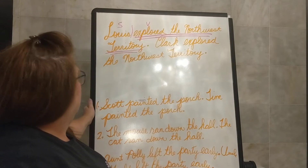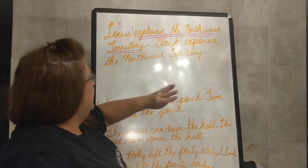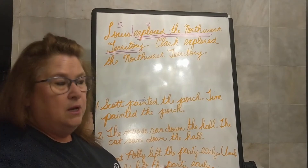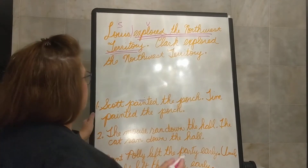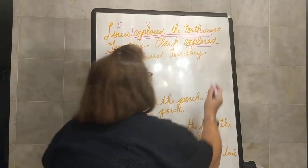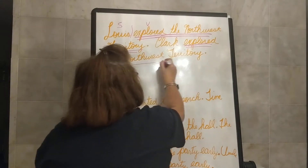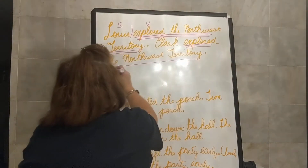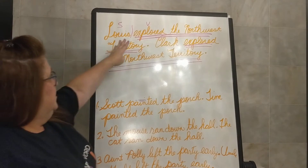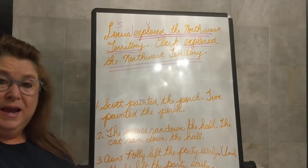Look at the next sentence. Clark explored the Northwest Territory. So Lewis explored the Northwest Territory, and our next sentence says Clark explored the Northwest Territory. What is our verb in this sentence? Our verb is explored again. And what's our whole predicate of the sentence? Explored the Northwest Territory. So if we were writing this, the predicate part of our sentence is exactly the same, right?